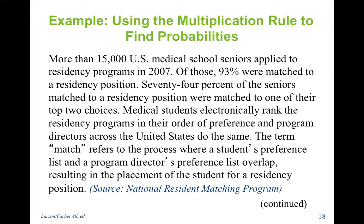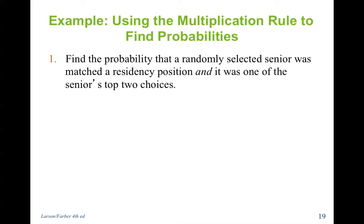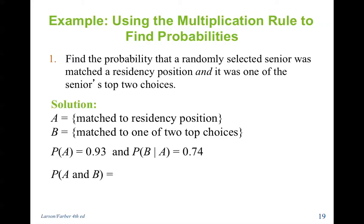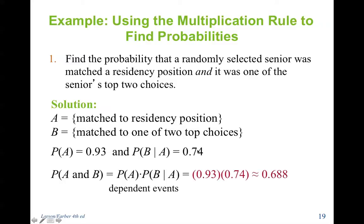More than 15,000 U.S. medical school seniors applied to residency programs in 2007. Of those, 93% were matched to a residency position, and 74% of matched seniors were matched to one of their top two choices. Find the probability that a randomly selected senior was matched to a residency position and it was one of their top choices. The probability of being matched is 0.93, and the probability of getting a top choice given a match is 0.74. Multiplying gives 0.688. These are dependent events — you must get in before you can get one of your top two choices.